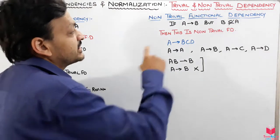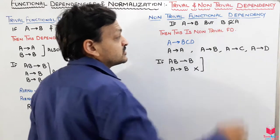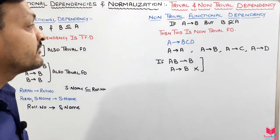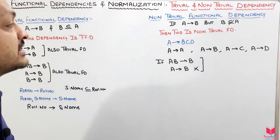If B is functionally dependent on A, but B is not a subset of A, then we will say that it is a non-trivial functional dependency.